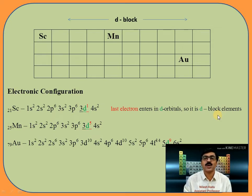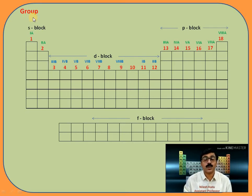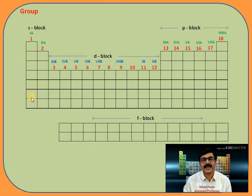Now we move towards the meaning of group and period. What is called a group? The vertical column of the periodic table is called a group — meaning when we move from top to bottom, that is a group. The vertical column of the periodic table is a group.